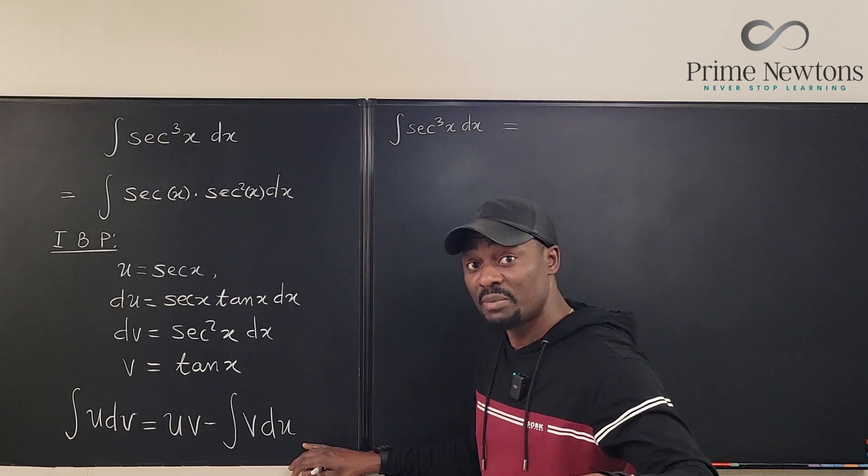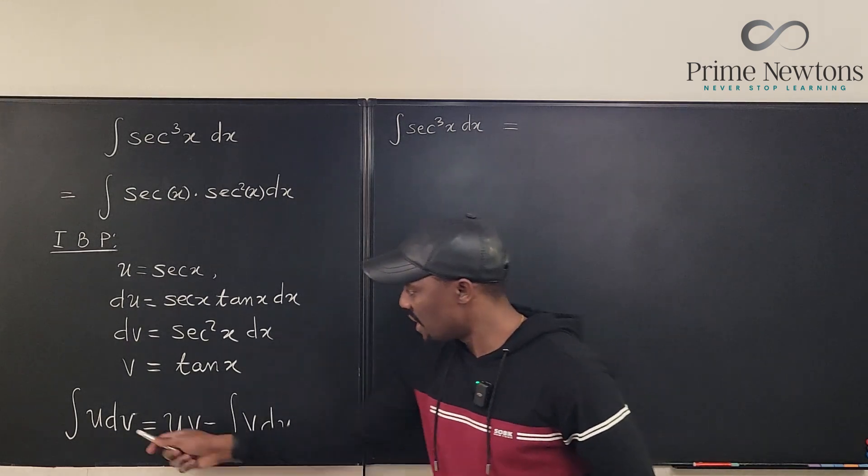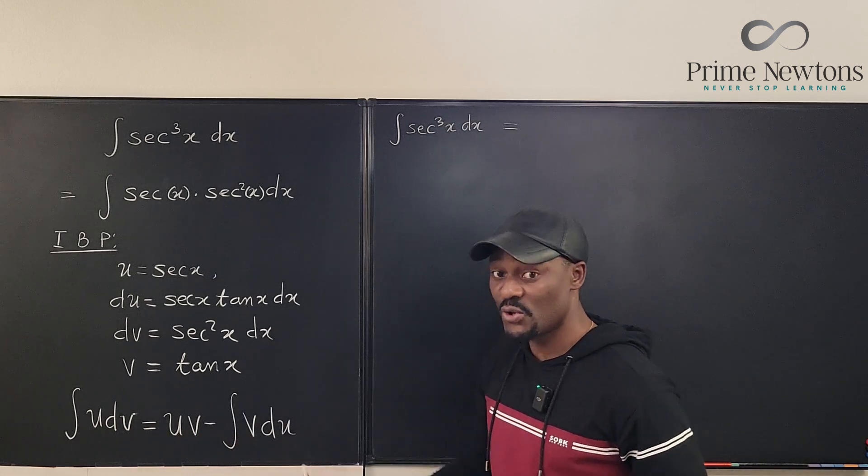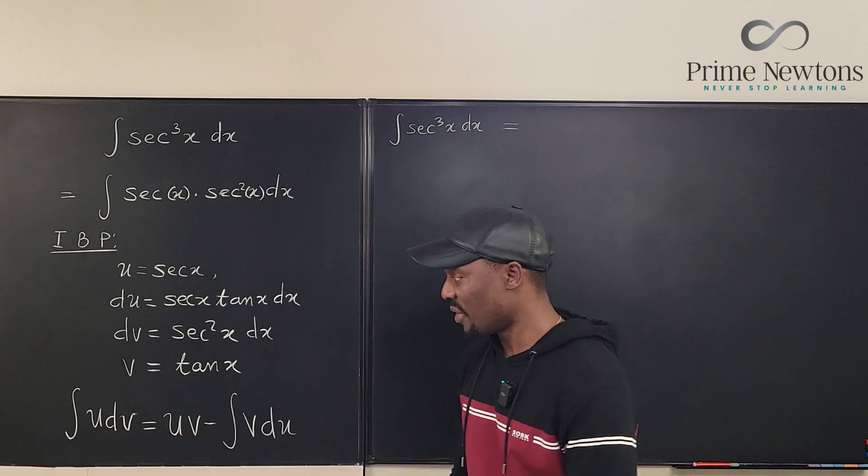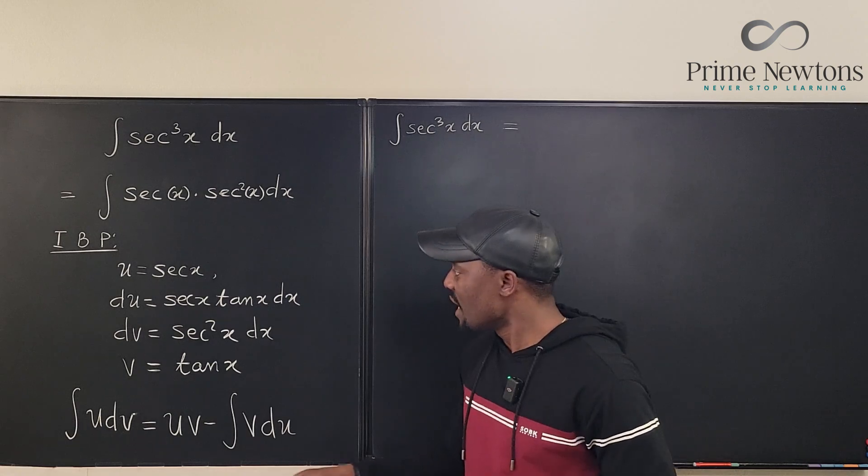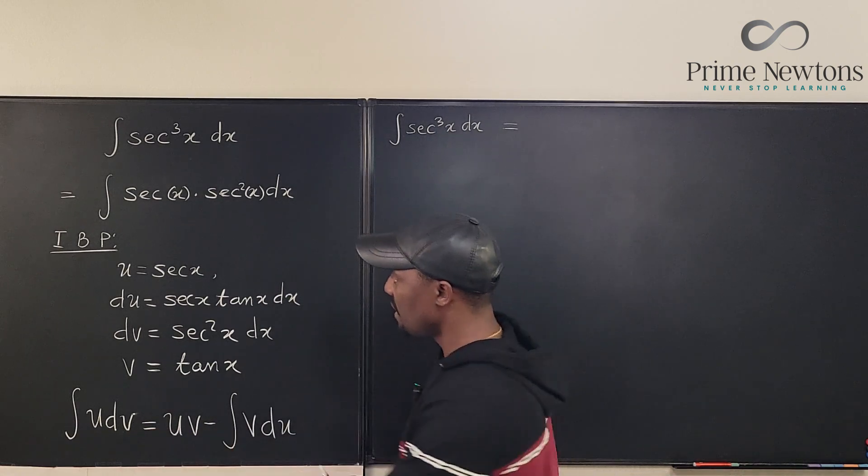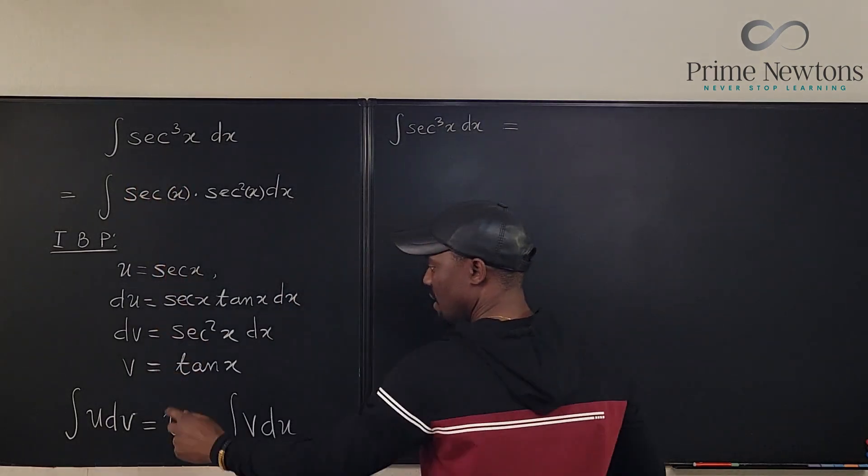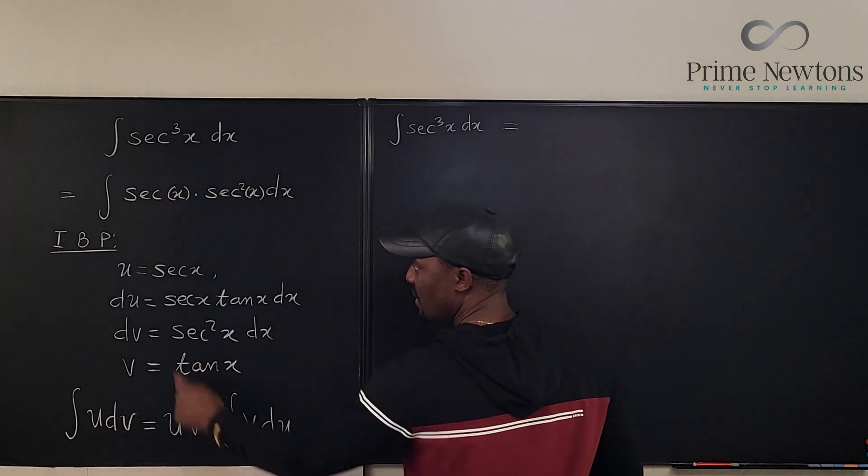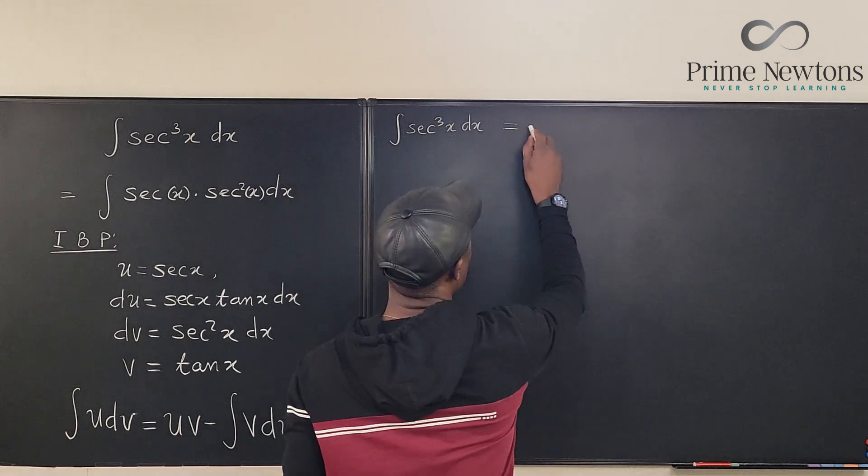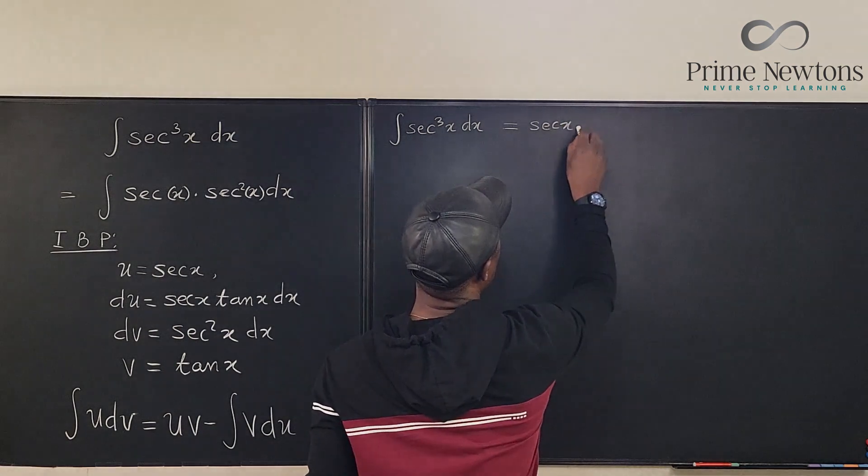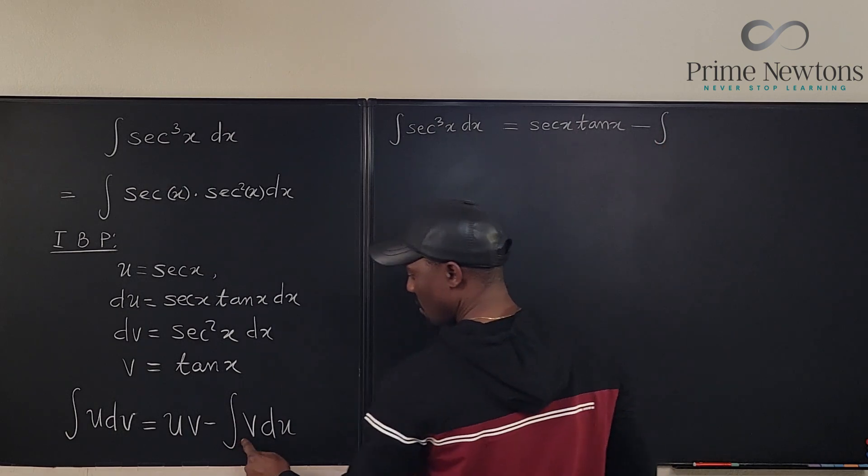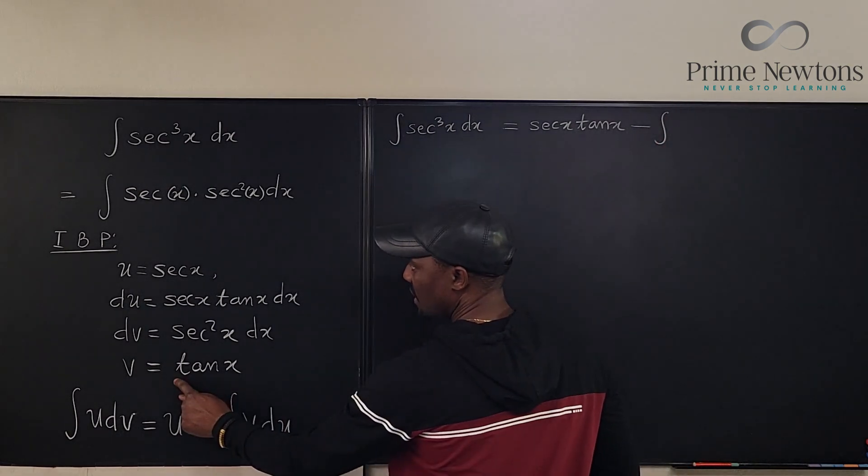So I switched places. We're gonna have the formula here. It is u multiplied by dv equals uv minus vd. You can actually use the di table, which is fast. But I want to show this this time. Here, so u dv is going to be what we have here, our secant cubed x dx. And here we're gonna have u times v is this times the secant x tan x. Secant x tan x minus the integral of v times du.